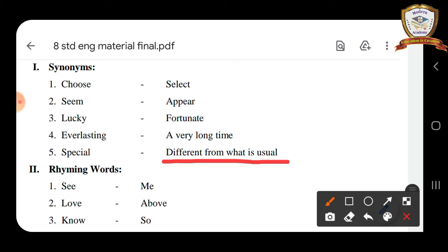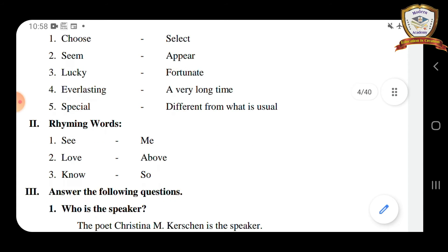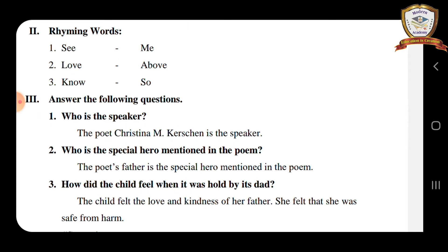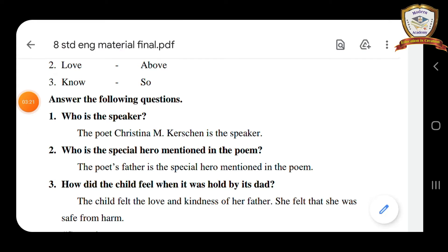Okay students, let's go to the next Roman. Second Roman: rhyming words. I am going to show you how to find out the rhyming words. There are rhyming words from the poem 'Special Hero'. The second Roman — rhyming words. First one is see/me.